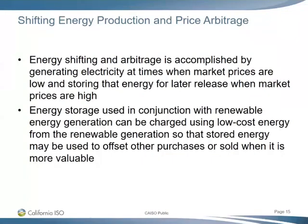Shifting energy production and price arbitrage is another driver heard from developers: moving energy production from low-price periods, storing that energy, and releasing it when market prices are higher. This capability is possible by adding storage to renewables, and the ISO thinks it may be one of the ways developers justify the economics of hybrid project development. There have been differing opinions on how large the price spread needs to be to make this effective, but it remains one of the key motivating drivers.